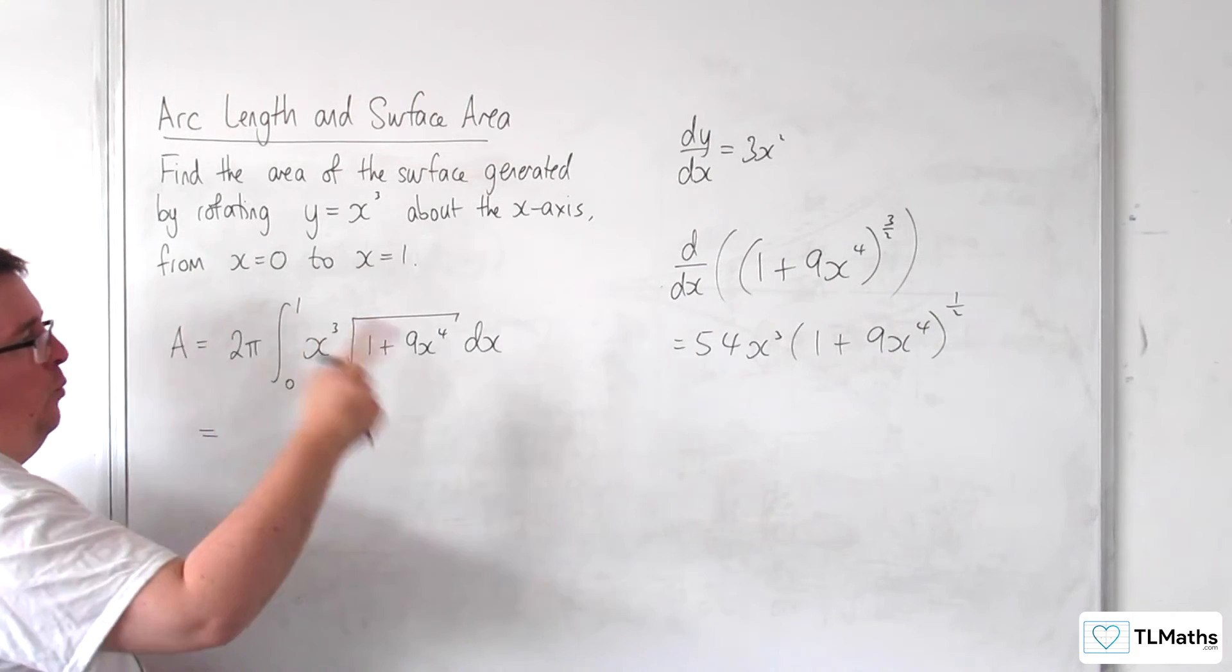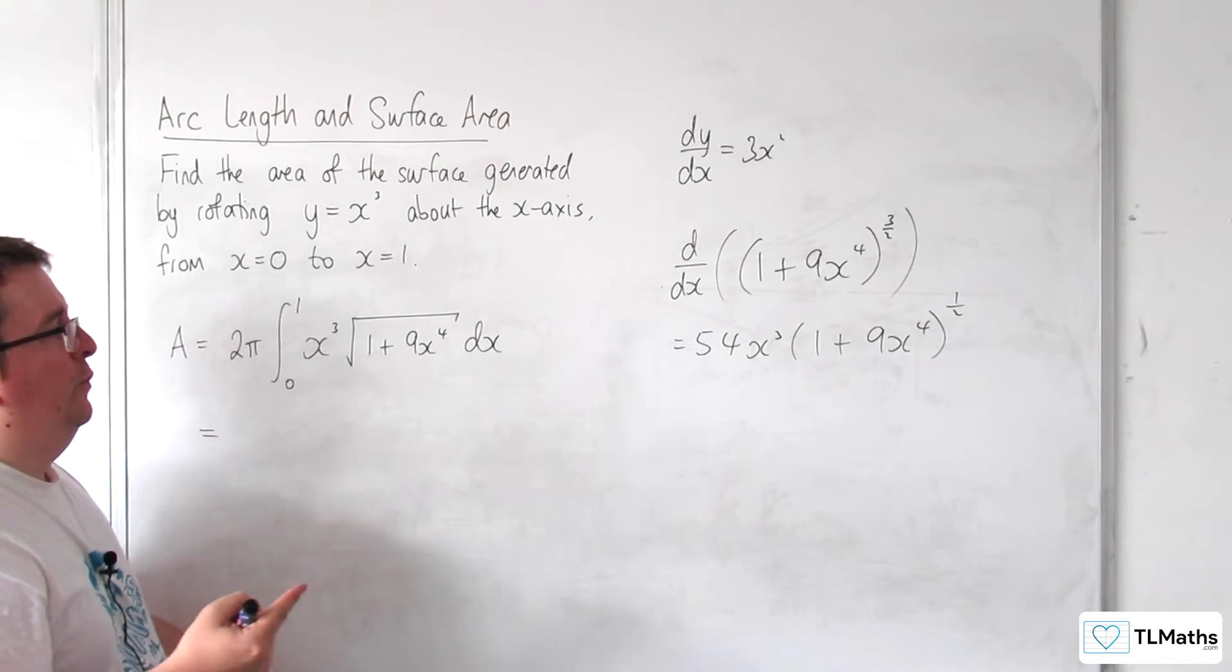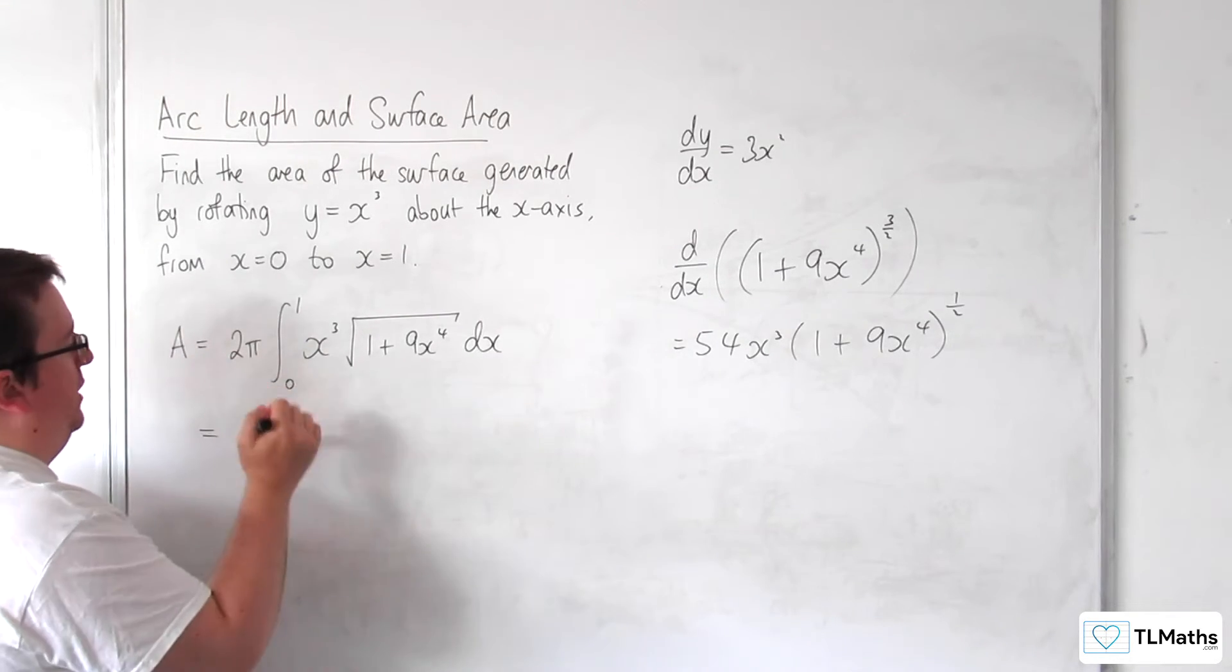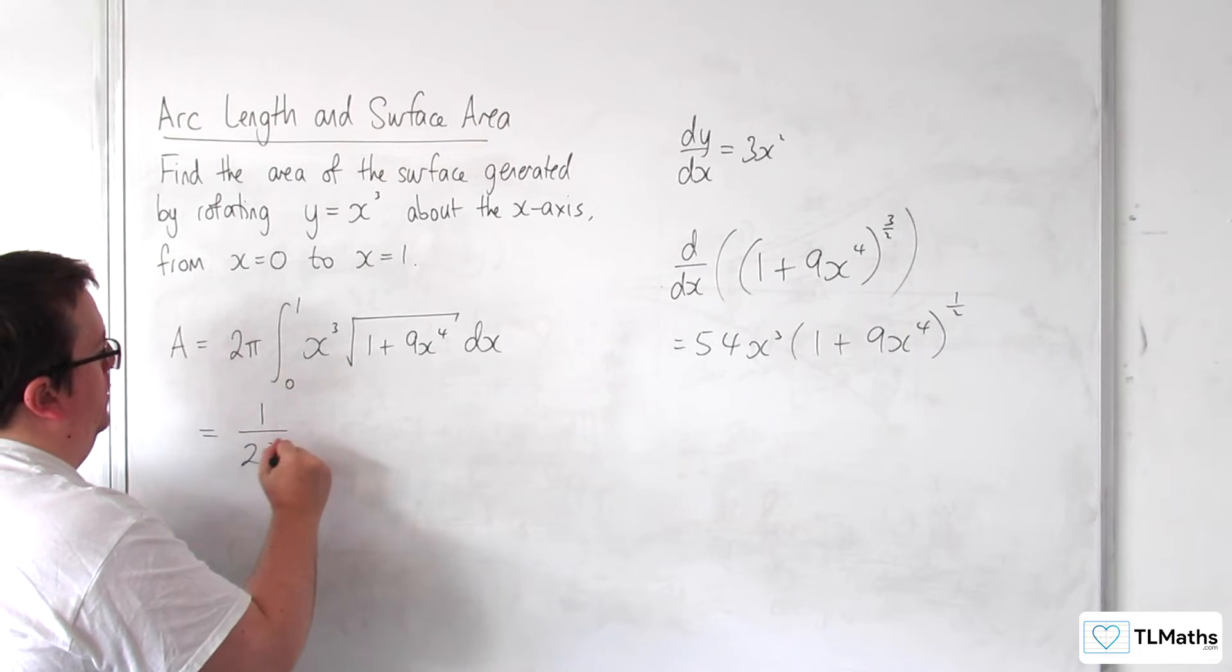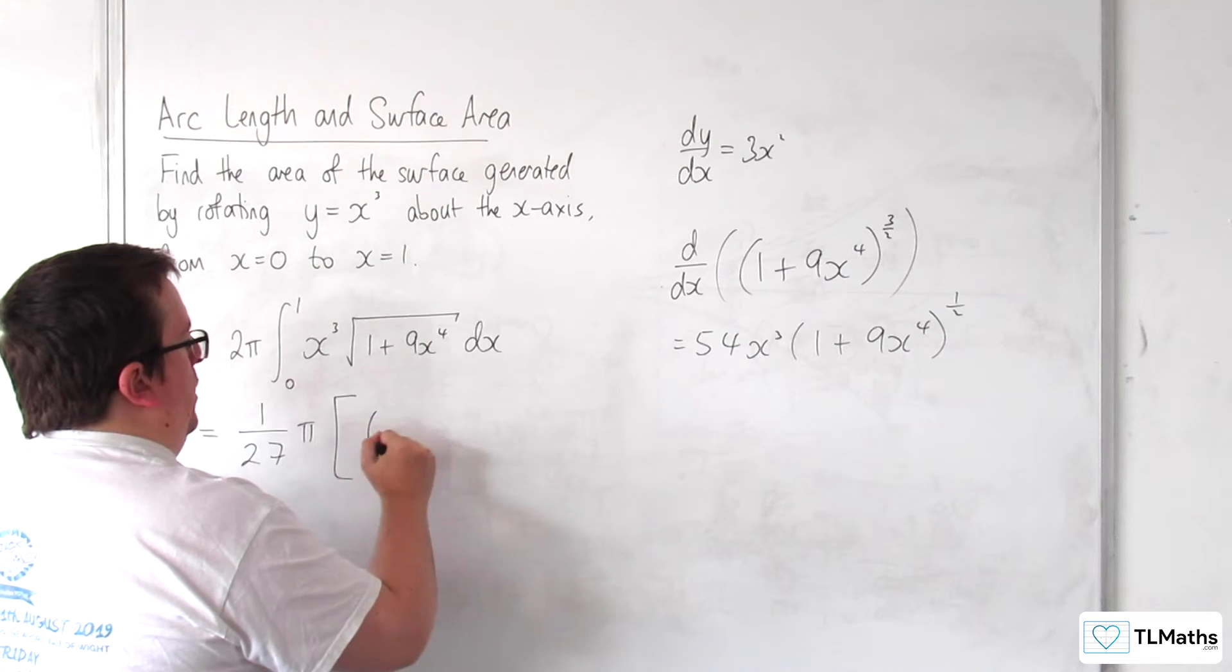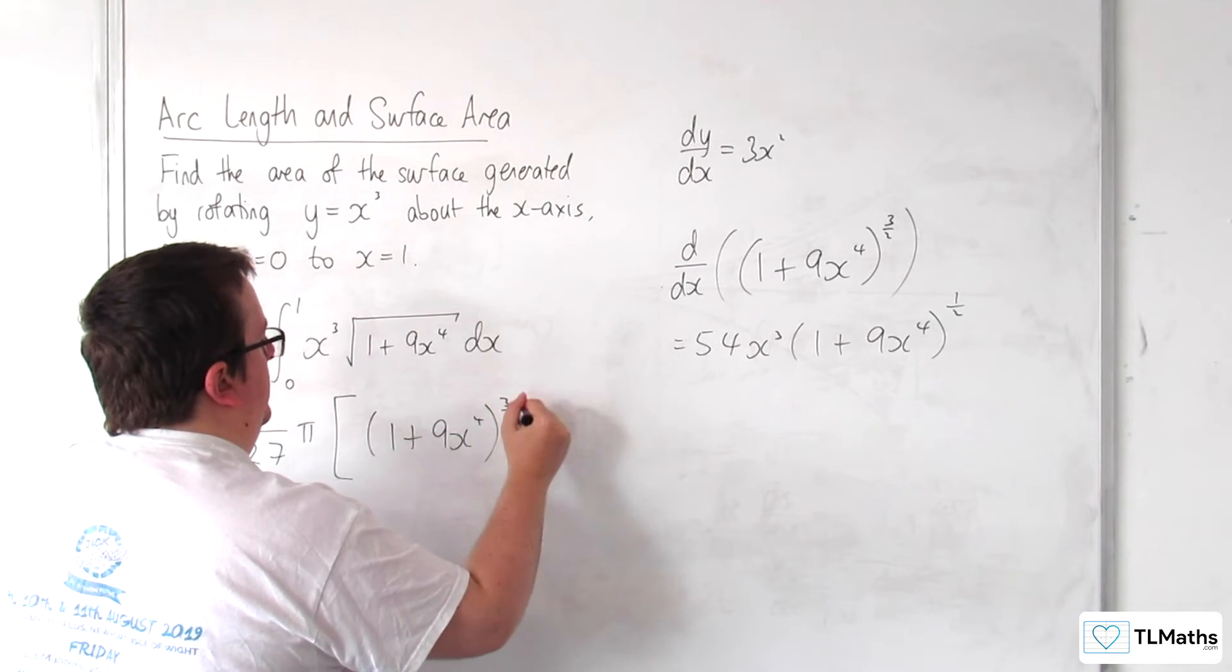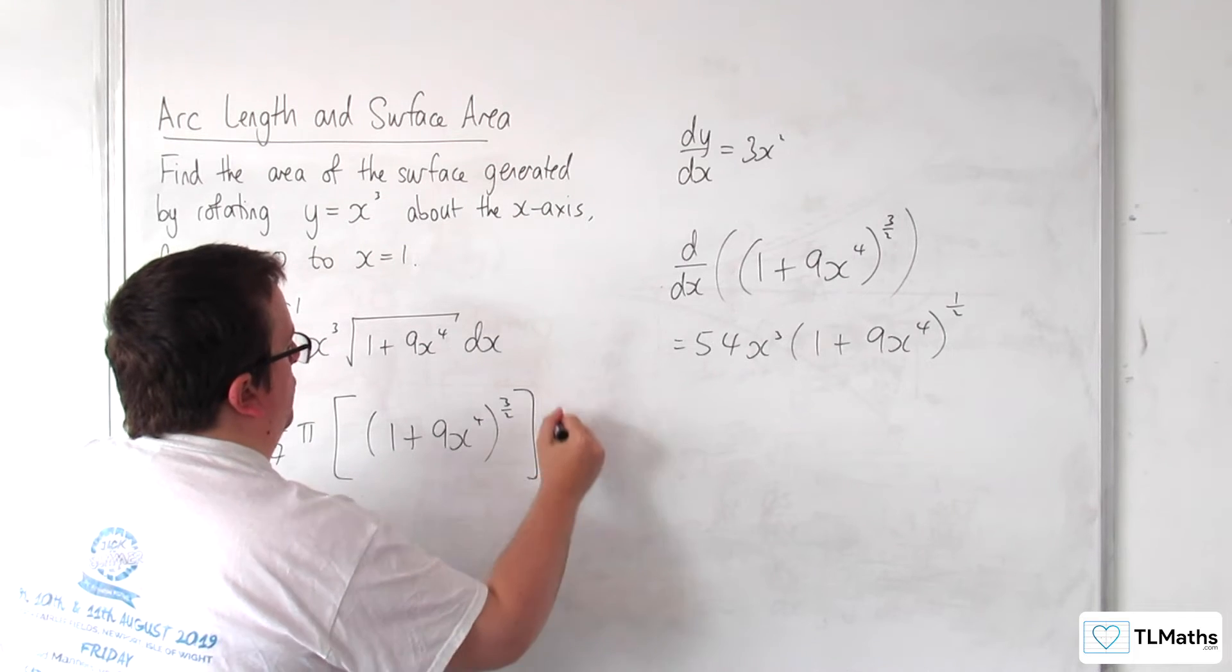So I've got the 1 over 54, I've got the 2 pi outside, so I can bring out the 1 over 54, and I have 2 over 54, which is 1 over 27 pi. And then I've got the 1 plus 9x to the 4, to the power of 3 halves, evaluated between 0 and 1.